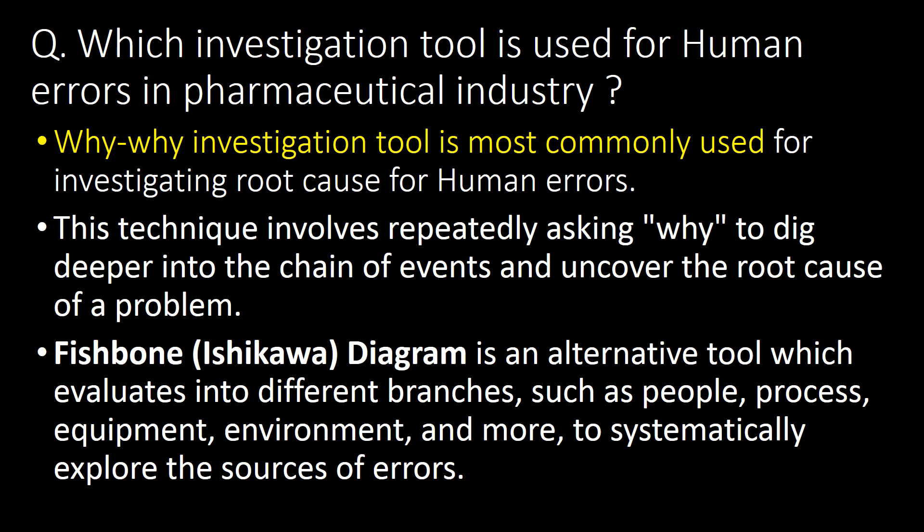The Fishbone diagram, also known as the Ishikawa diagram, is an alternative tool which evaluates different branches such as people, process, equipment, environment, and more to systematically explore the sources of errors.